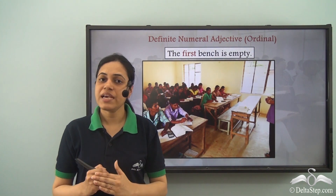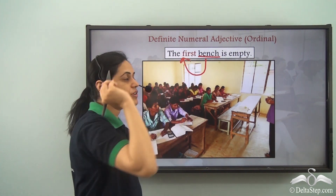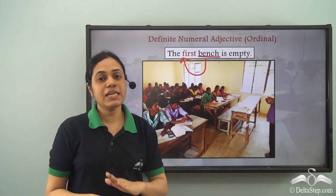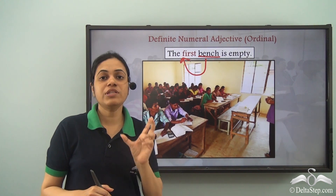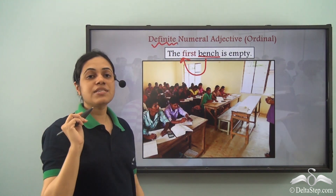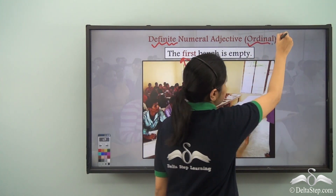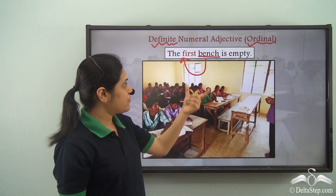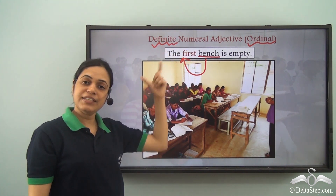'The first bench is empty.' Here, bench is a noun and describing this noun is the word 1st, so it is an adjective. The word 1st tells us about the exact position of the bench. Because it tells us the exact position, it is a definite numeral adjective, and because it tells us about position, it is ordinal. So, position means ordinal and exact means definite numeral adjective.